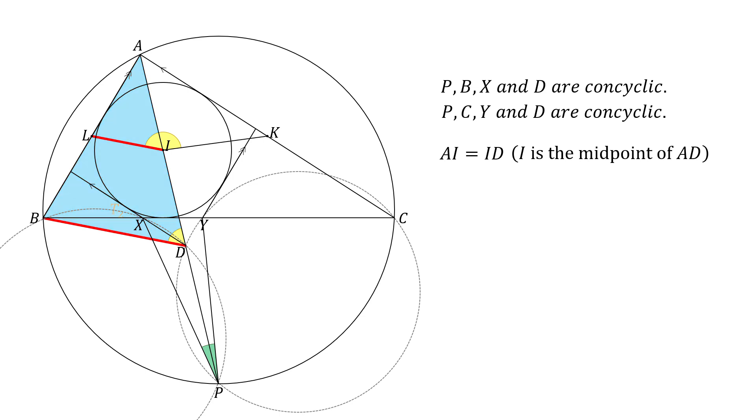By similar reasoning, we can conclude that KI and CD are parallel. Angle CDA and angle KIA are corresponding angles, so they are equal. Therefore, angle BDC and angle KIL are equal.